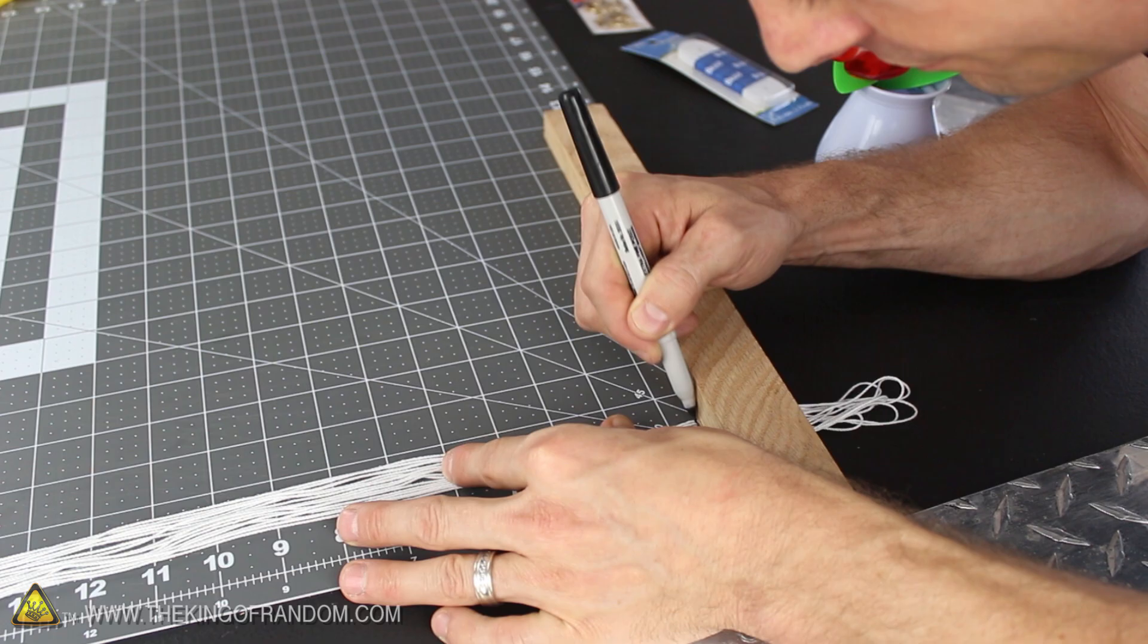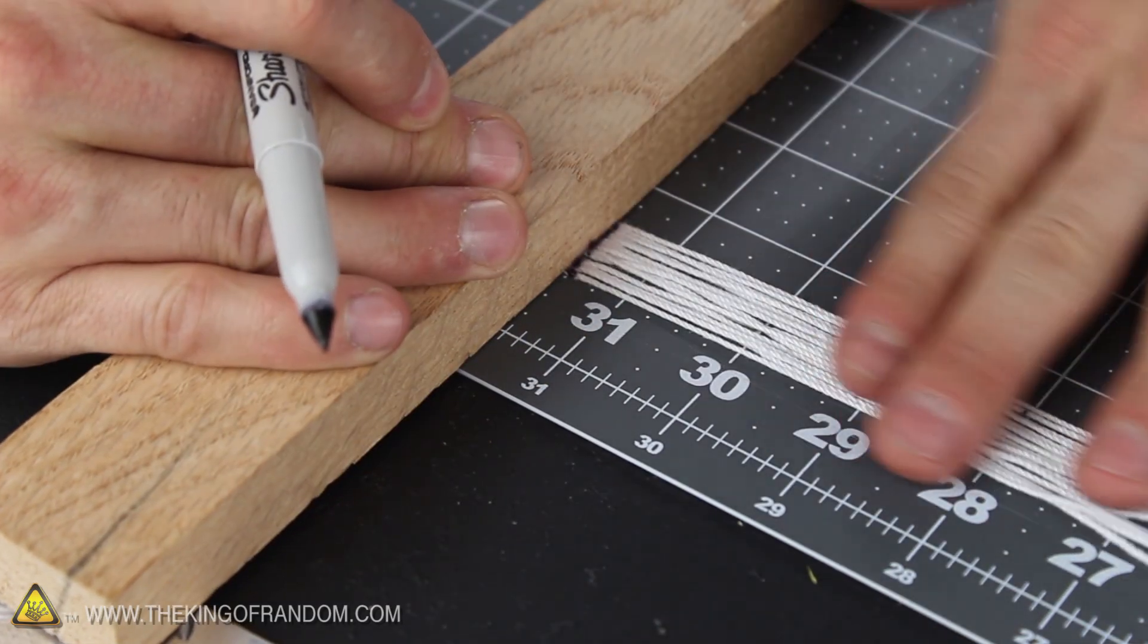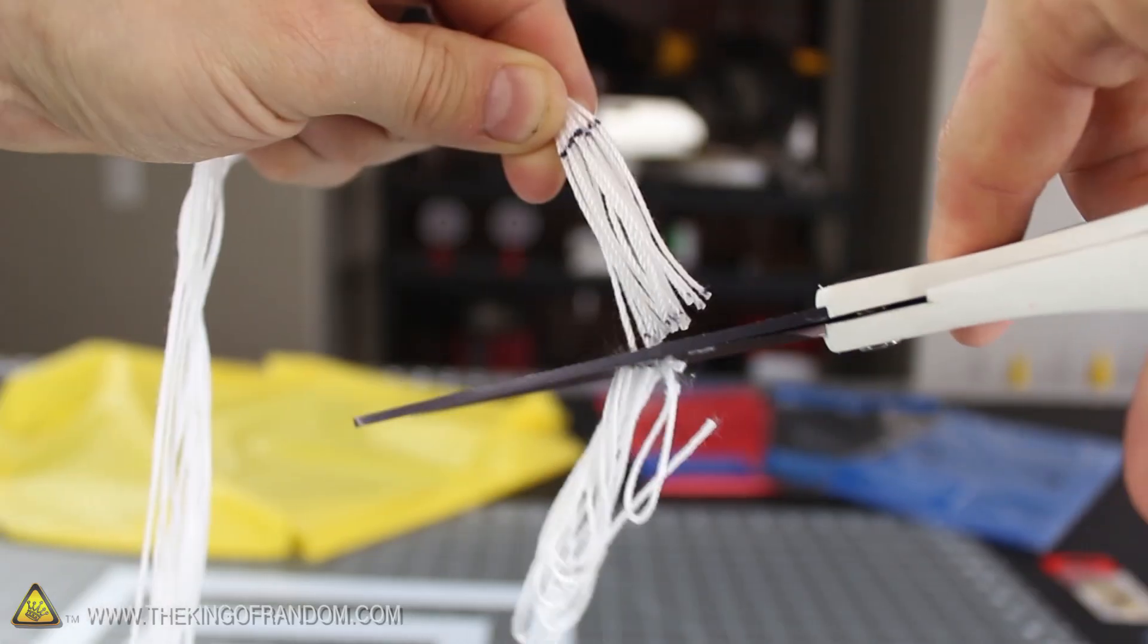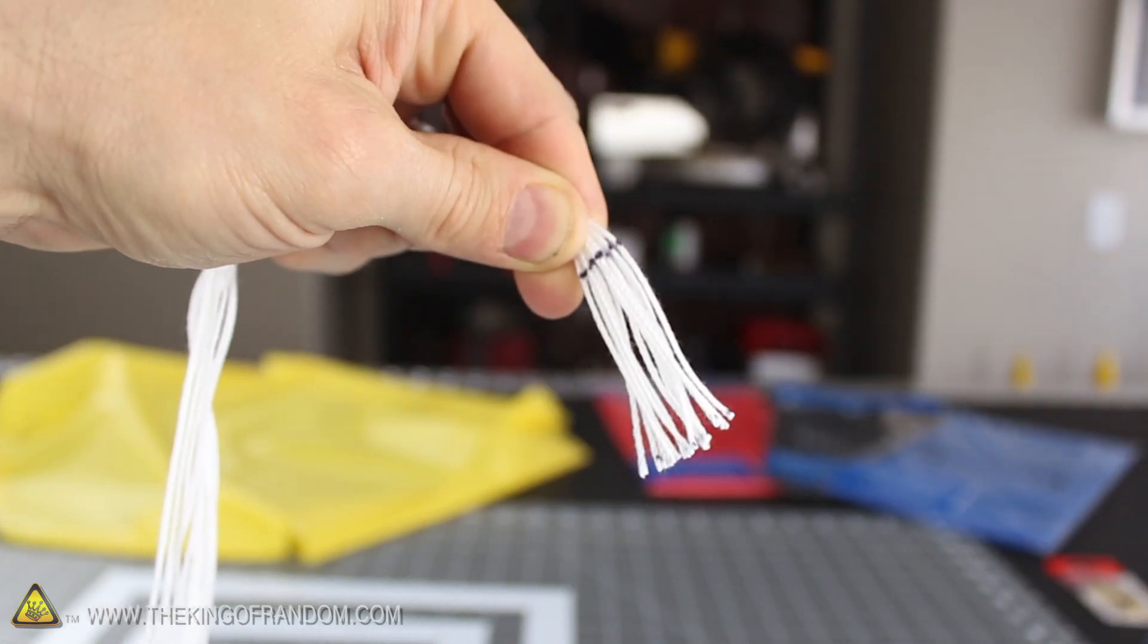It's a good idea to mark both ends of the strings an inch and a half from the bottoms, because these markings will make it a lot easier when it's time to attach them to the canopy. Cut the strings so they're exactly 33 inches long, and if you did it right, that should leave an inch and a half on either end of the markings.